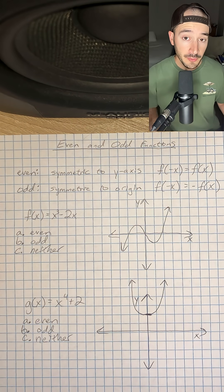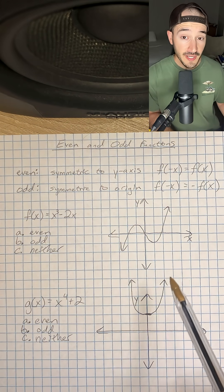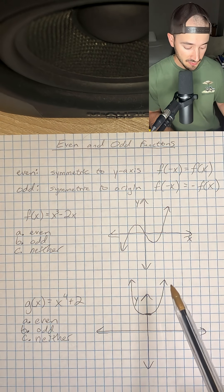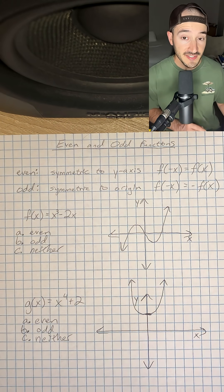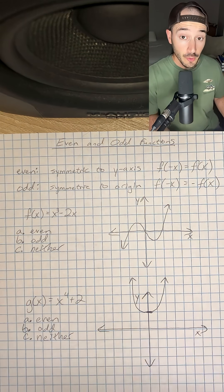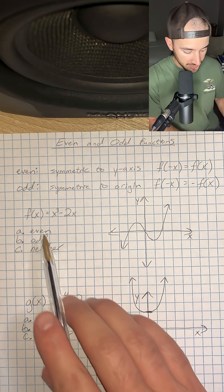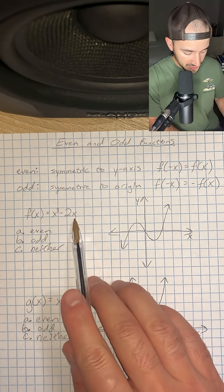If you remember from my previous video, this graph looks like it's symmetric with respect to the origin, so I'm thinking it's going to be odd, but we're going to test it algebraically. In order to do that, we're going to plug in negative x everywhere that we see x.